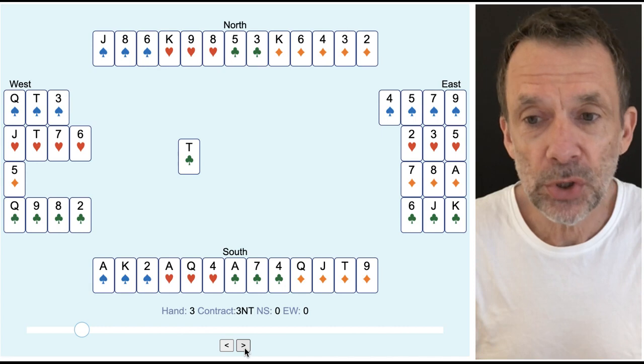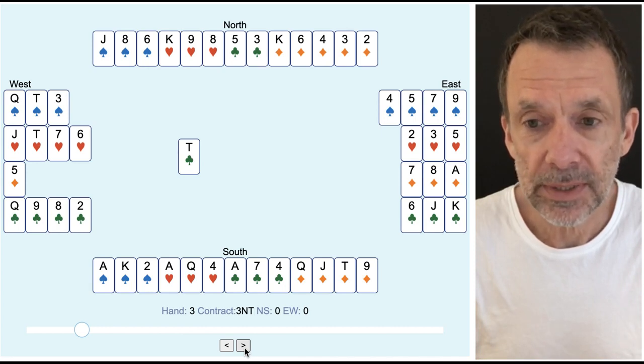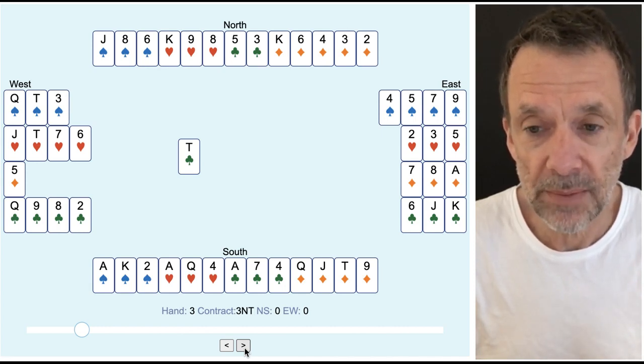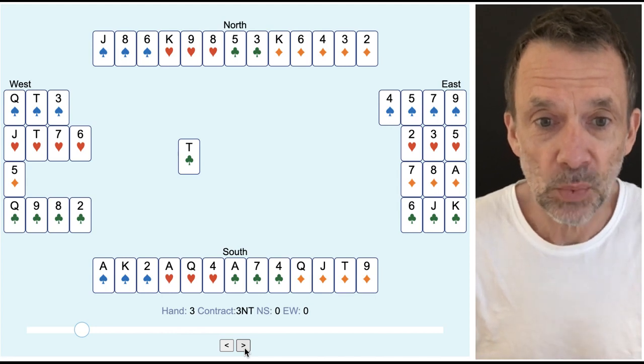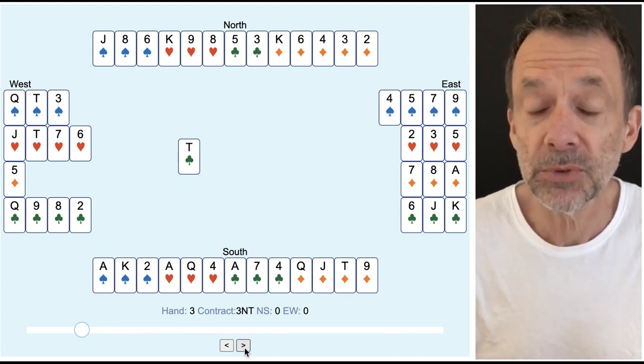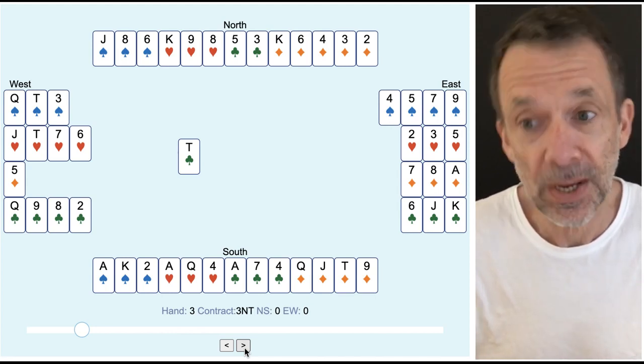Unfortunately when we lose to the ace of diamonds east is going to win that ace of diamonds and play a club back to west and we could lose four club tricks plus the ace of diamonds. That wouldn't be so good.